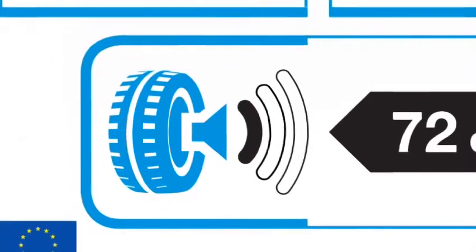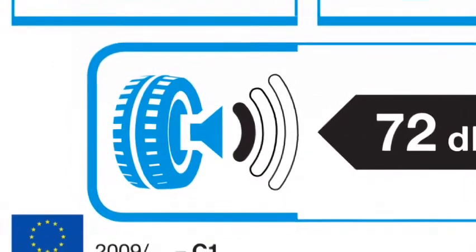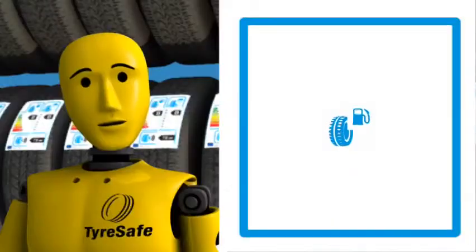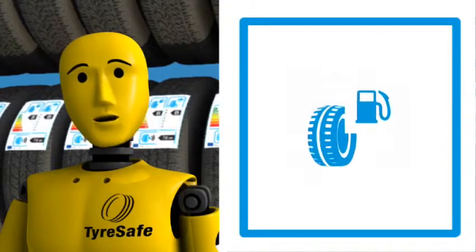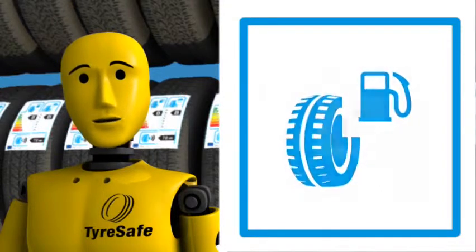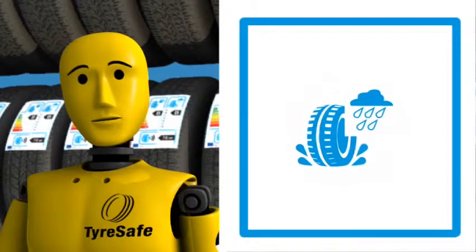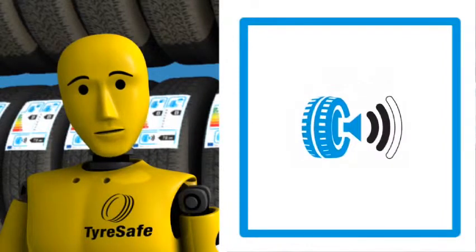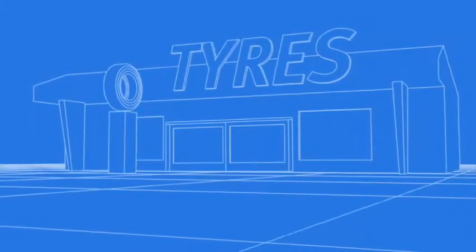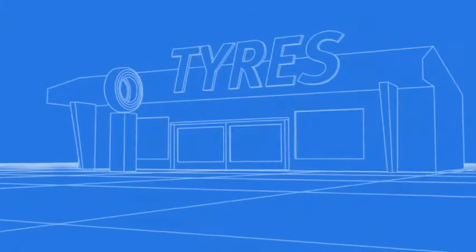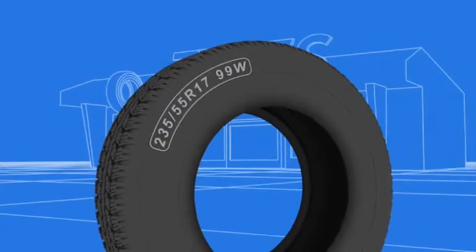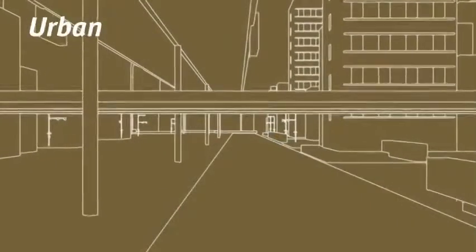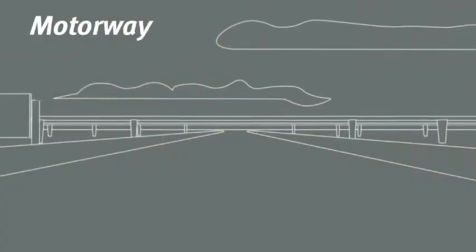The labels will help explain how your tires perform in these three key areas and help you make a more informed choice about safer and more environmentally friendly driving. Your local tire retailer will be able to provide information on the performance of a range of tires, as well as any other factors you wish to consider when choosing your tires in order to meet your driving style or requirements.